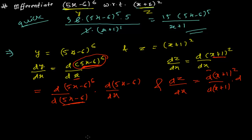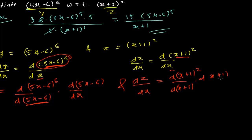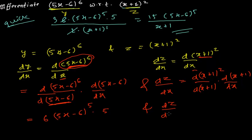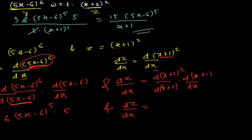Using the power rule where the base matches: dy/dx = 6(5x − 6)^5 times 5, which gives 30(5x − 6)^5. For dz/dx: differentiating (x + 1)^2 with respect to (x + 1) gives 2(x + 1), and the derivative of (x + 1) with respect to x is 1. So dz/dx = 2(x + 1).